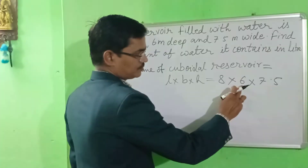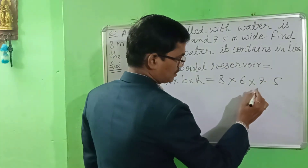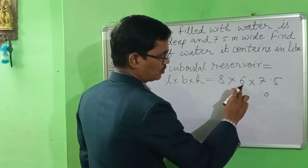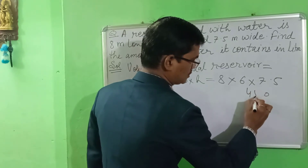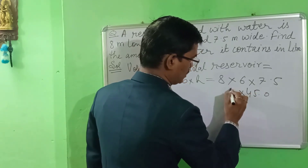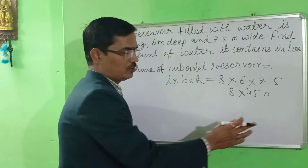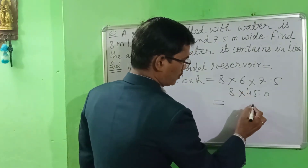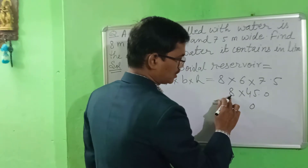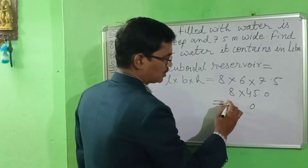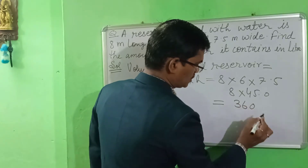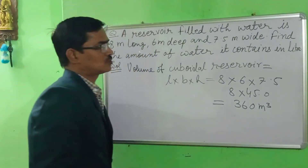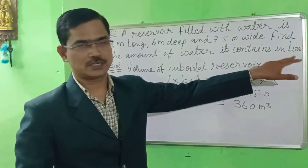First, 6 multiplied by 7.5: that gives 45. Then 8 multiplied by 45 gives 360. So the volume is 360 meter cube. So you have to convert it into liters.